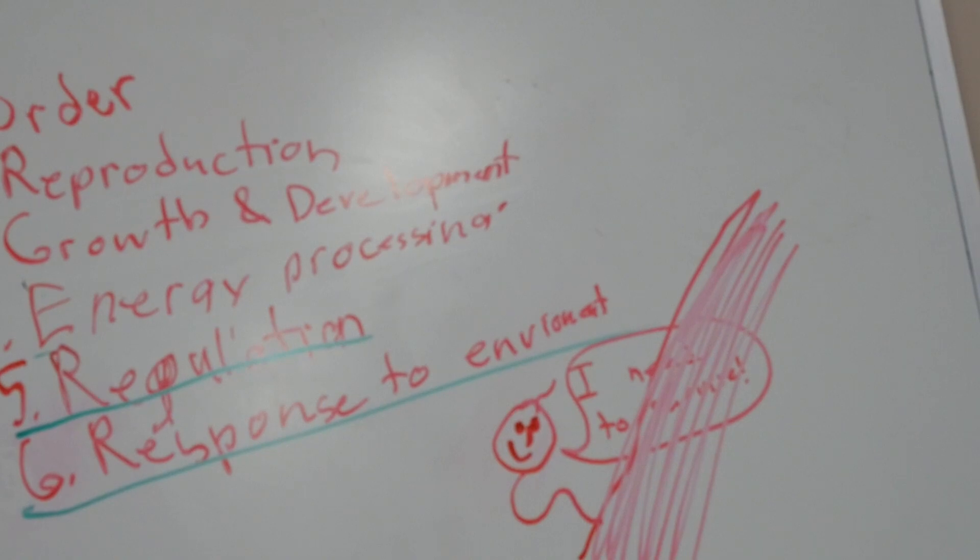The embryo locates a specific spot in the uterine wall called the decidua, and it aligns itself in just the right way to properly attach.